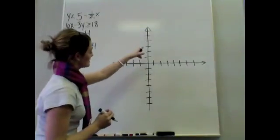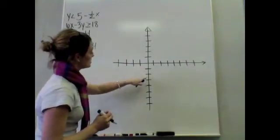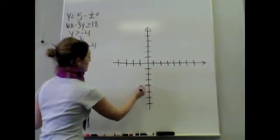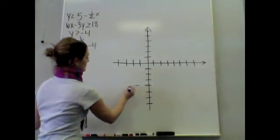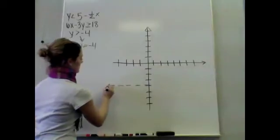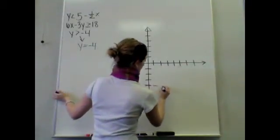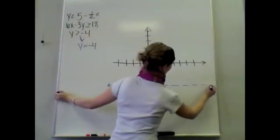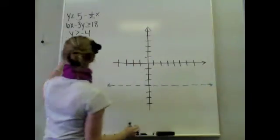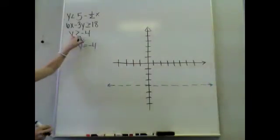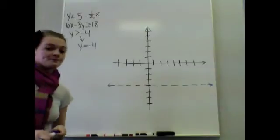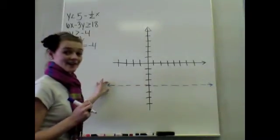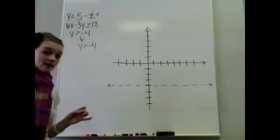Y equals negative 4, so I'm at the y-axis — 1, 2, 3, 4 — I'm at the negative 4 spot. Now, I also looked at the inequality and whether or not it was going to be a dotted or a solid shaded line. When y is greater than — there's no 'or equal to' part — so I'm going to create a dashed or dotted line. I'm not going to shade yet; I'll get to that momentarily.